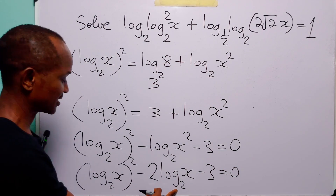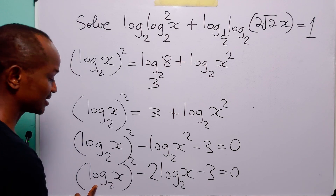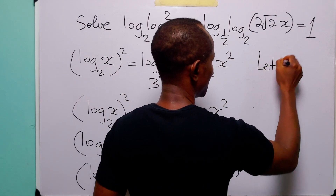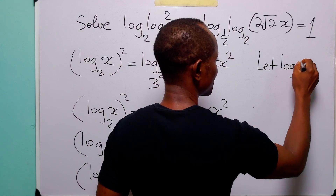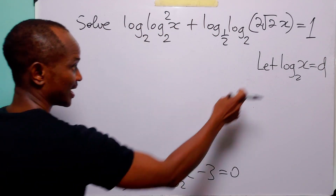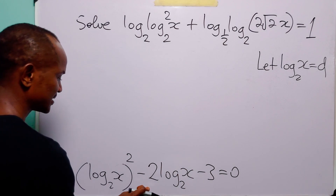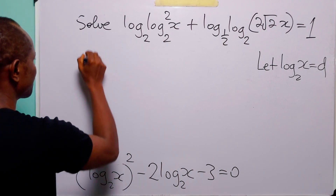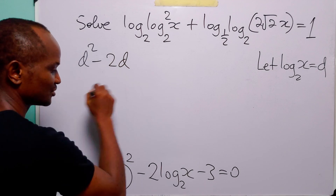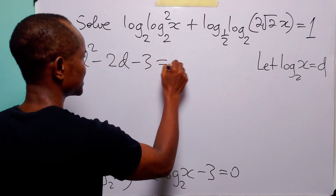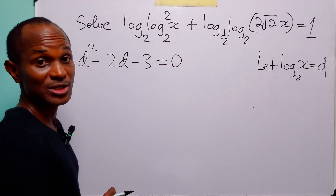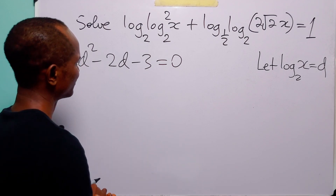We can see log to base 2 of x appearing twice. Let log to base 2 of x be equal to d. With this substitution, the equation becomes d squared minus 2d minus 3 equals 0. We now have a quadratic equation in d which we can factorize.